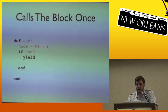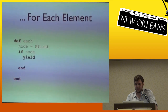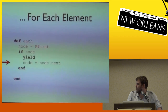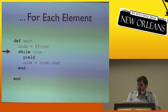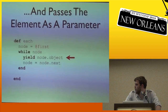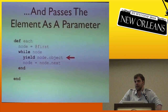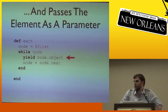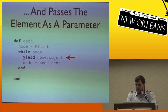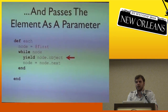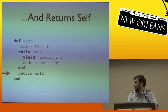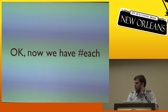A basic yield alone doesn't iterate and doesn't call the block on the object. Let's change that by turning the if into a while, so we iterate over each element. Then we yield the object by passing it to yield. We've specified the semantics of each: we iterate over each object in the linked list, pass that object as a parameter to the block using yield, and then finally return self.